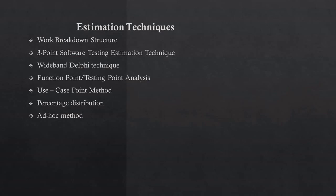Third is the Wideband Delphi technique, which we will discuss in a further session in detail. Fourth is Function Point or Testing Point Analysis — measuring the size and giving weightage to each function point to cover each and everything in detail. Fifth is the Use Case Point method, which covers each use case and scenario to complete quickly. Sixth is Percentage Distribution — distributing each person or key holder at some percentage, so that only that part of testing is done by each individual. Seventh is the Ad-hoc method, which picks up each and every aspect randomly.